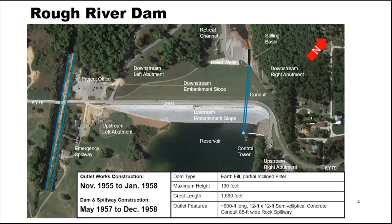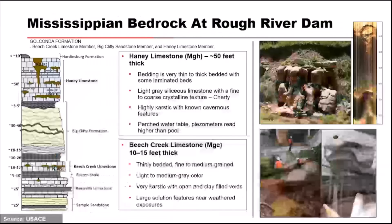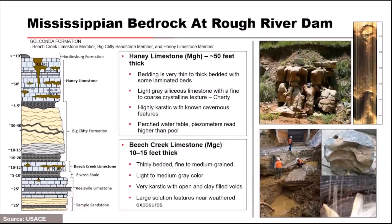The right abutment outlet works consists of a control tower, cut-and-cover outlet conduit, a stilling basin, and a retreat channel. This is the only means of controlled flow conveyance for the reservoir. In the far left abutment, there's an uncontrolled open-cut rock spillway that's 65 feet wide and 1,800 feet long. The dam was constructed in the late 1950s, so the best practices at the time were not up to our current standards, and the dam has some inherent construction defects as well as other internal flaws.